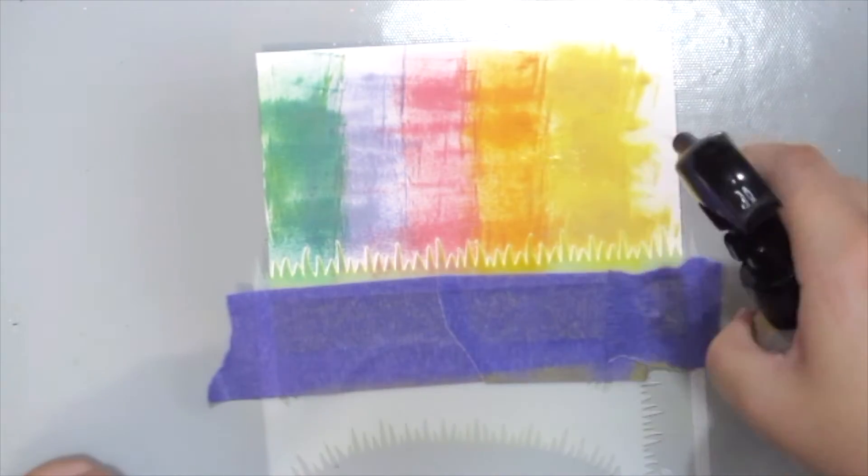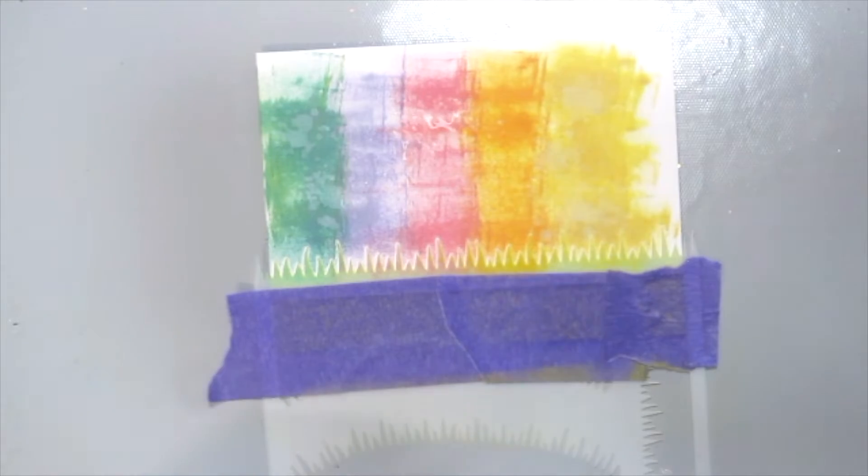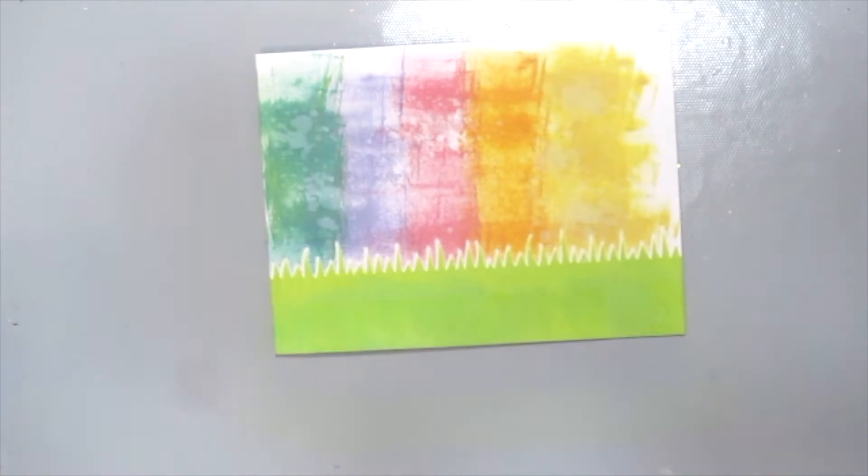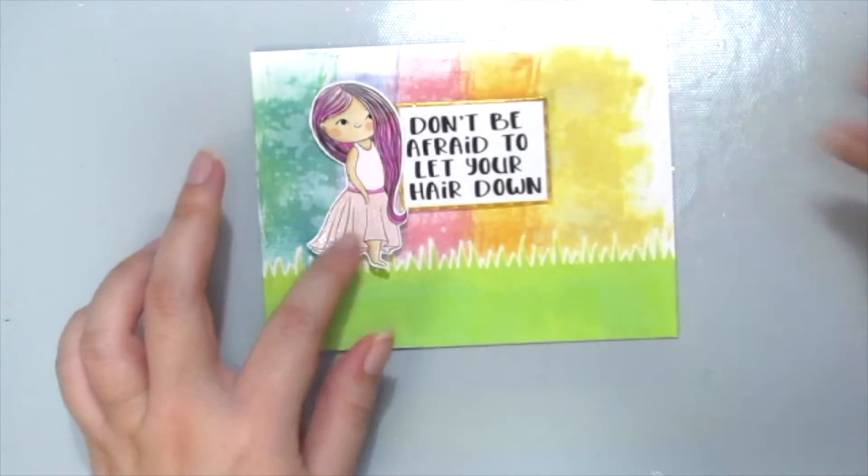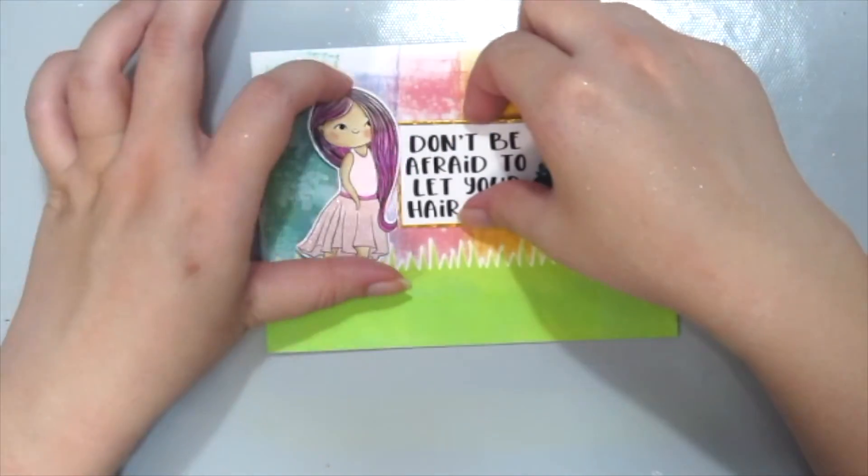Then I'm also adding some water here to create some distressed look and removing the stencil carefully. And now just adding all my sentiment, my cute girls, and my flowers to my card.